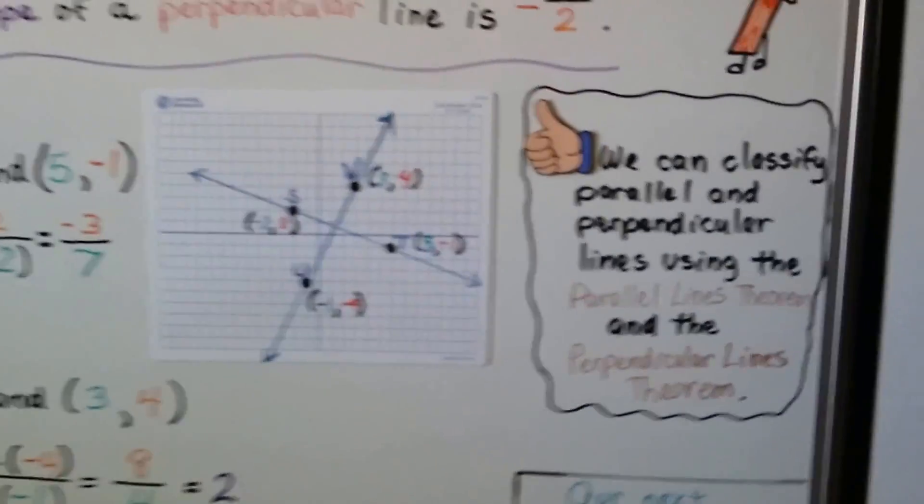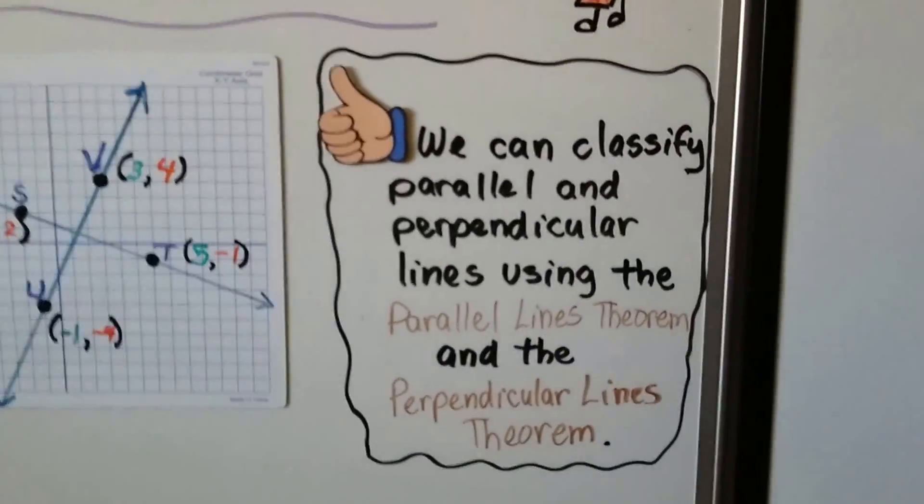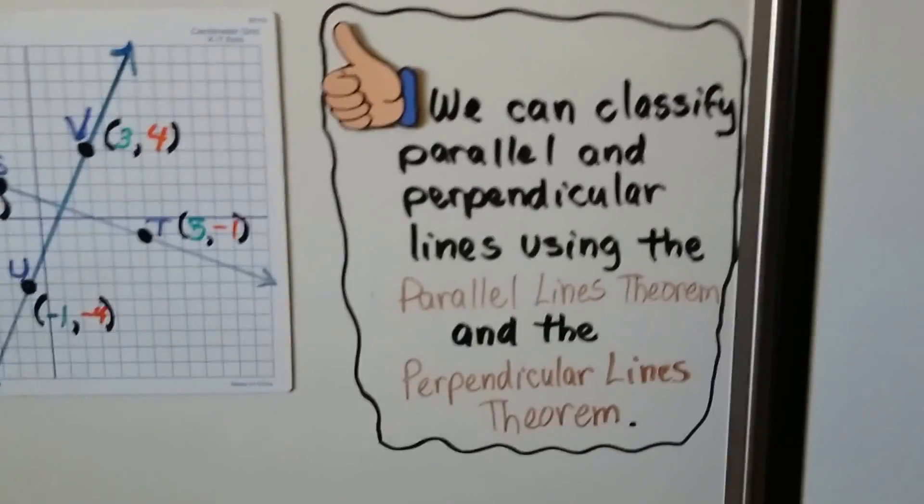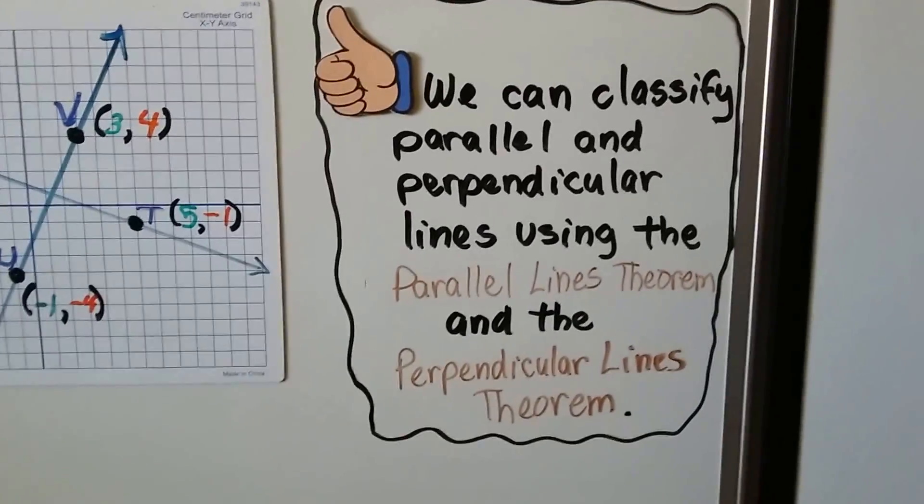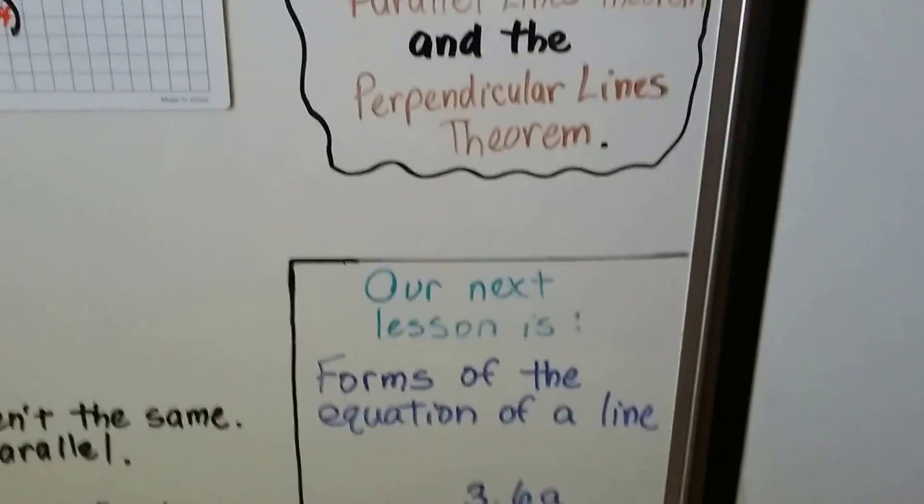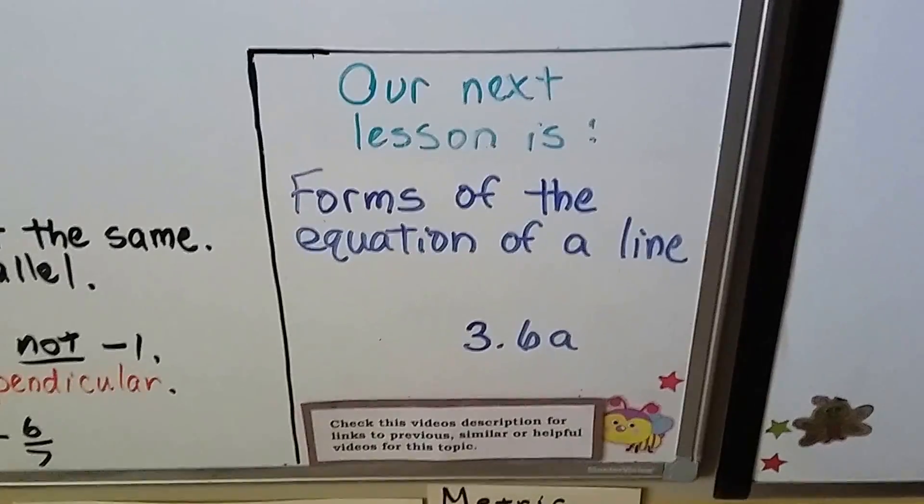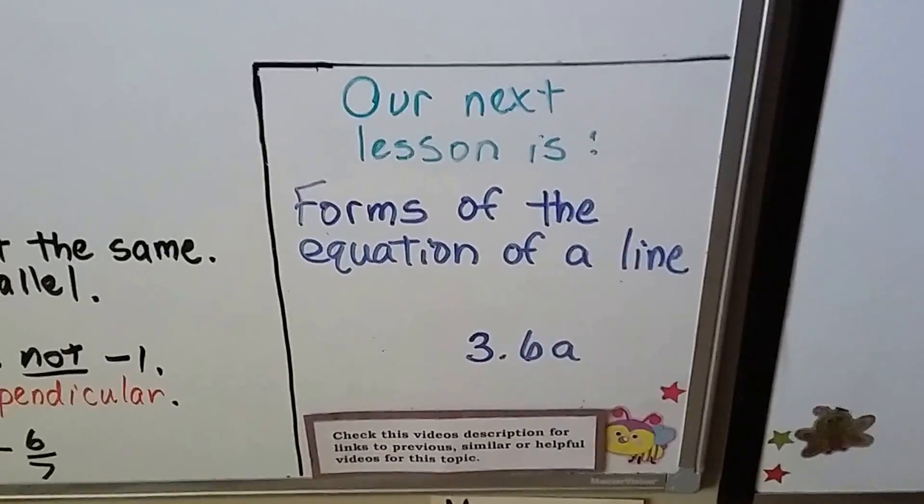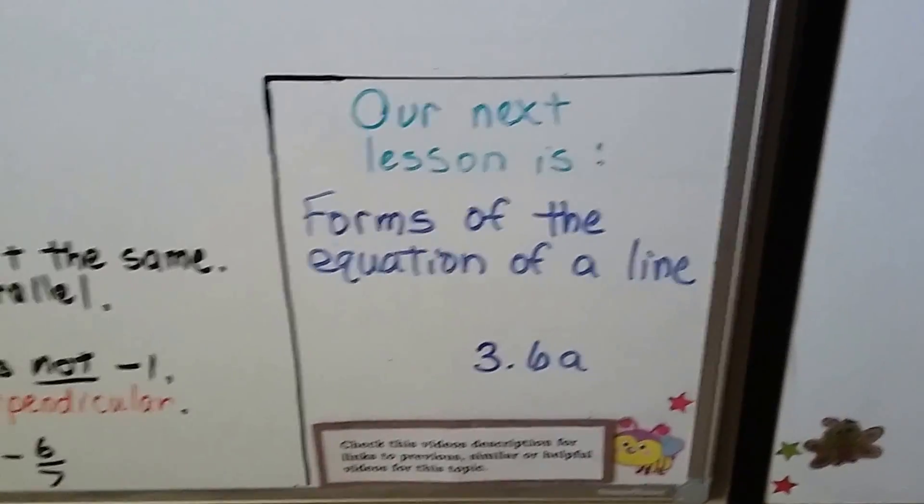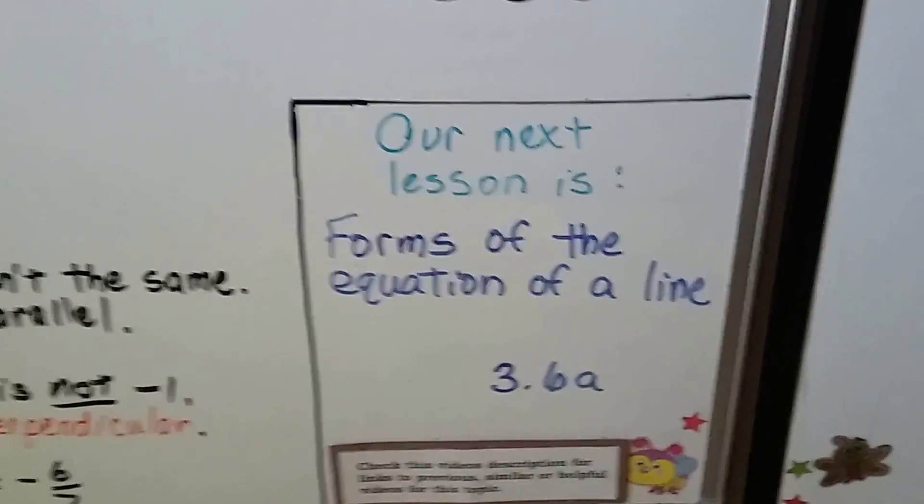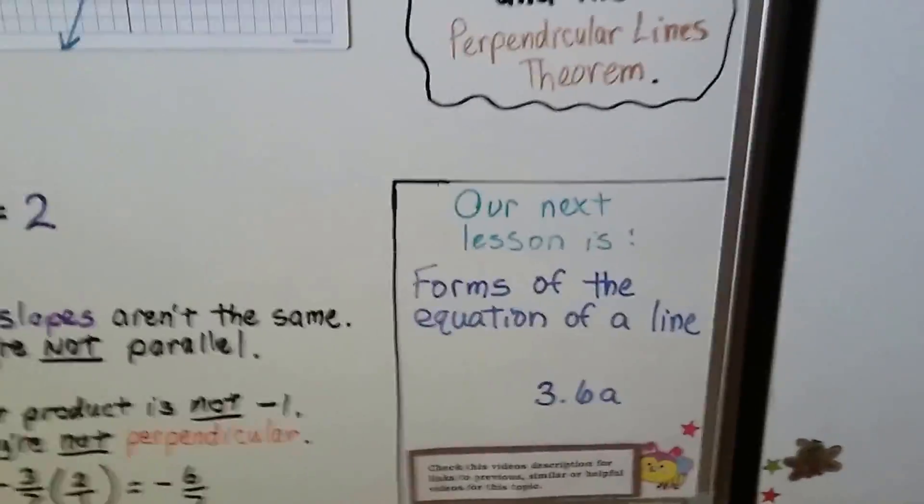We can classify parallel and perpendicular lines by using the parallel lines theorem and the perpendicular lines theorem. Our next lesson, 3.6a, we're going to talk about the forms of the equation of a line—point-slope form and slope-intercept form. After 3.6 videos, we're going to be moving on to chapter 4 and talking about triangles and congruence.